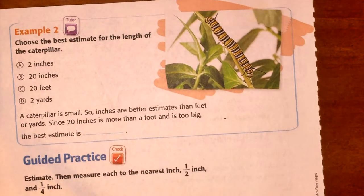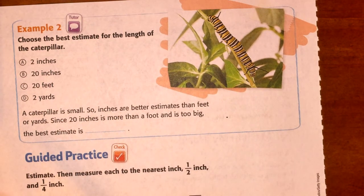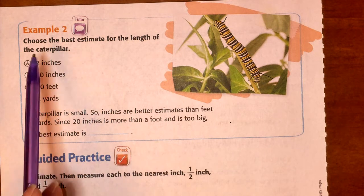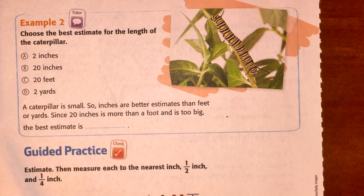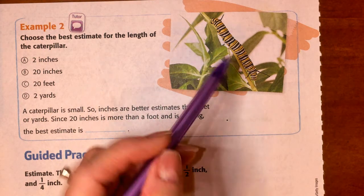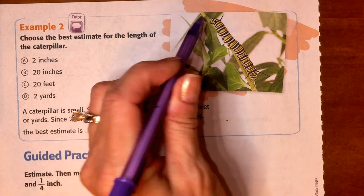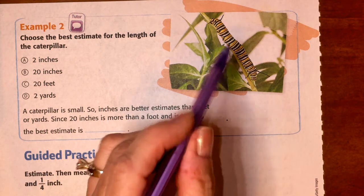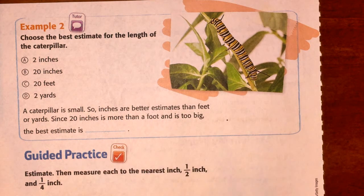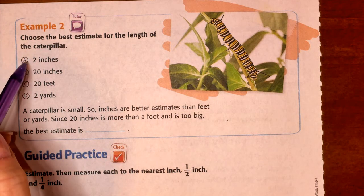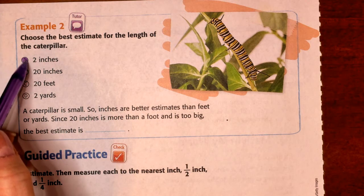Now, for example two, we are going to choose the best estimate for the length of the caterpillar. So, you're going to sort of eyeball the caterpillar and go, hmm. Well, from here to here is about one paper clip. And from here to here is about two paper clips. So, your best estimate, your best guess.